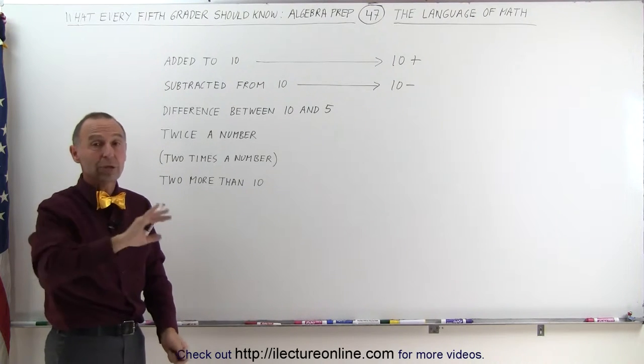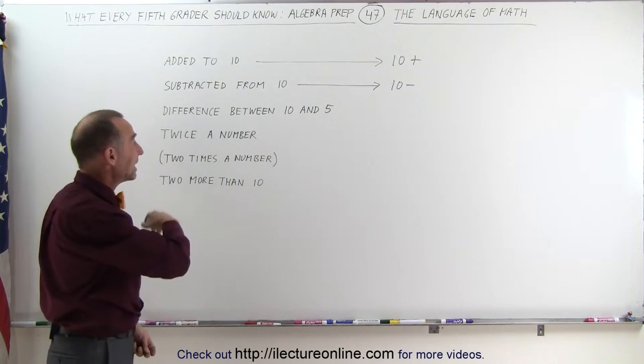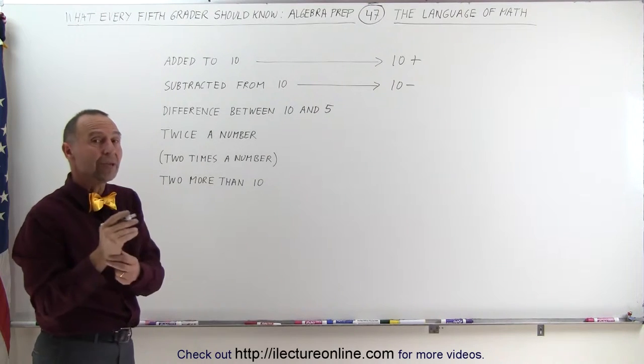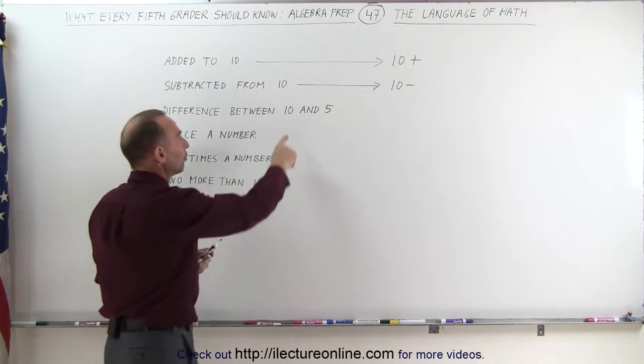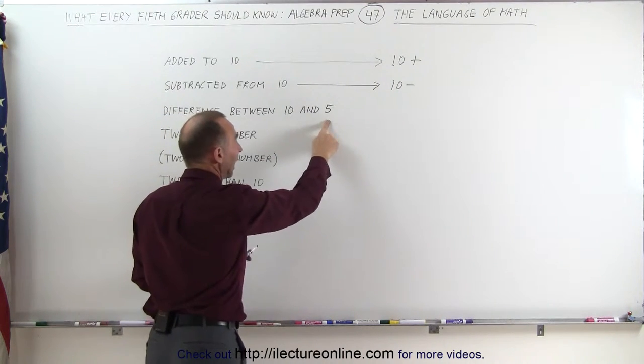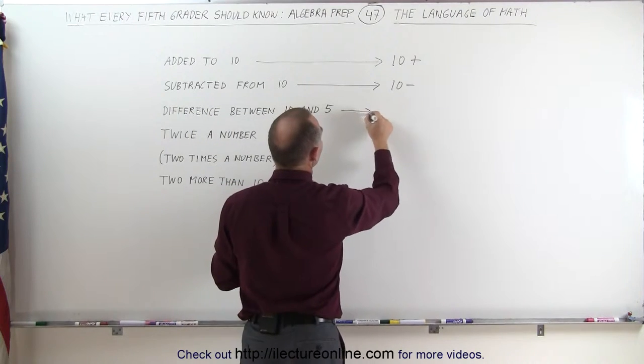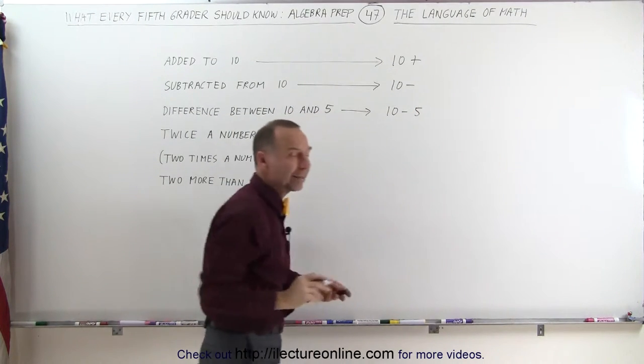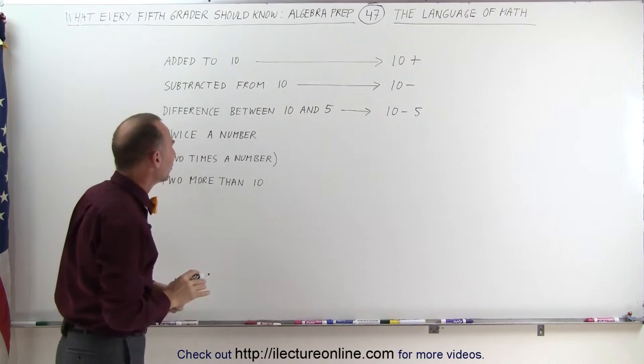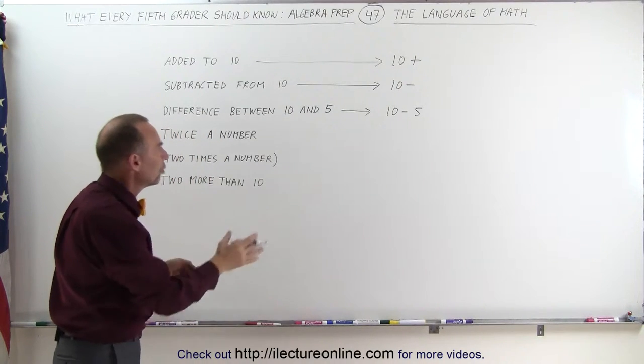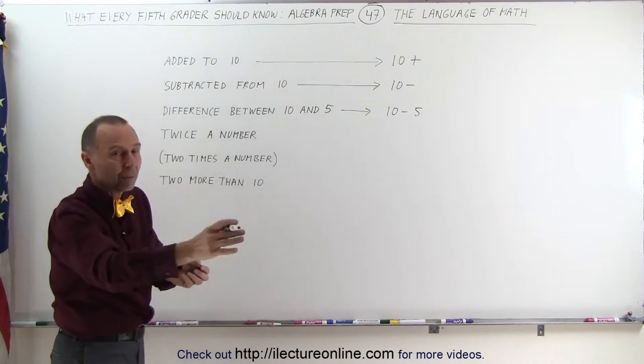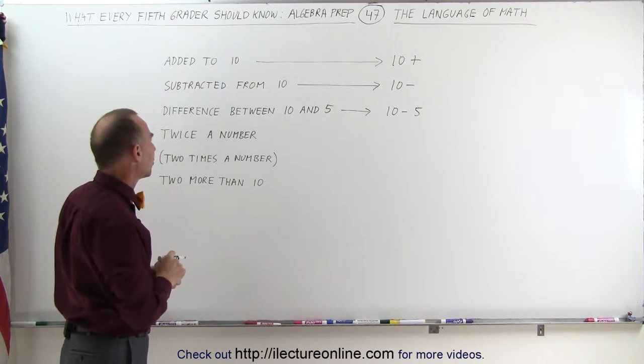If somebody says the difference between two numbers, for example the difference between 10 and 5, then you're going to have subtraction, and you put the first number first and the last number last. So this means 10 minus 5, not the other way around, and that's sometimes very confusing. When you see the difference between two numbers, you write the first number first, the last number last, and you write a subtraction sign between them.